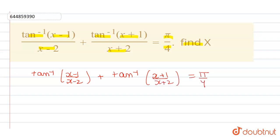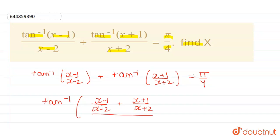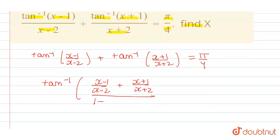So we have to find the value of x. We will use the formula of tan inverse of a plus tan inverse of b, which is tan inverse of (a plus b) divided by (1 minus a into b). Here a is (x minus 1) divided by (x minus 2) and b is (x plus 1) divided by (x plus 2), equal to pi by 4.